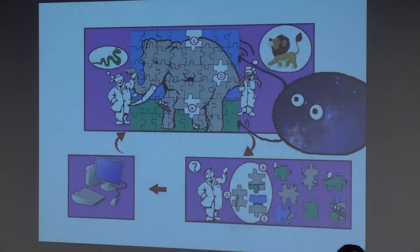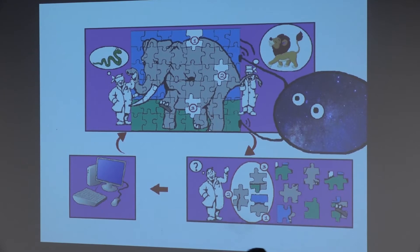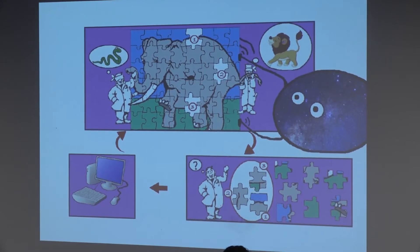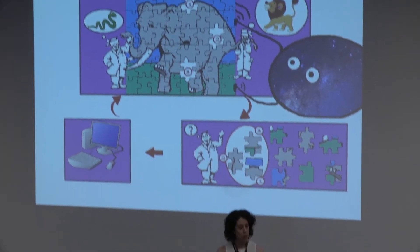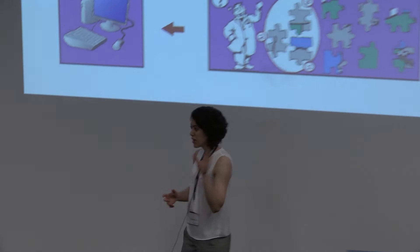I'm going to start with a little story. Once, there were two blindfolded physicists that had to identify the animal in front of them. The first one touched a cylinder-like object and thought it was a snake. The second one touched a hairy tail and thought it was a lion. It turns out the animal was an elephant.